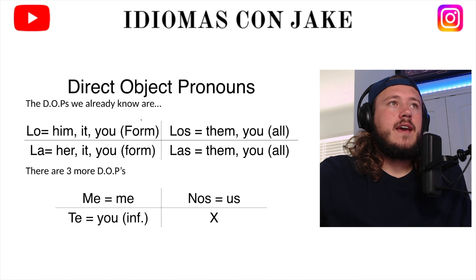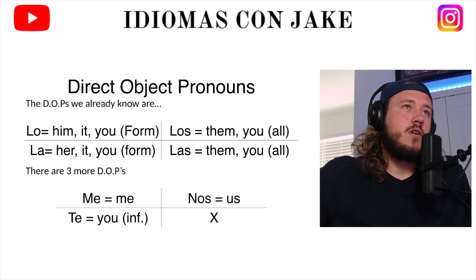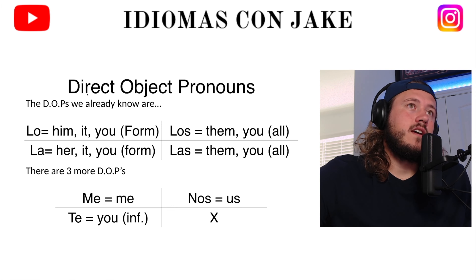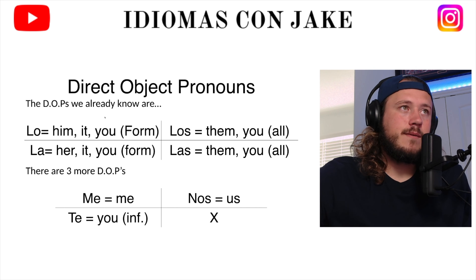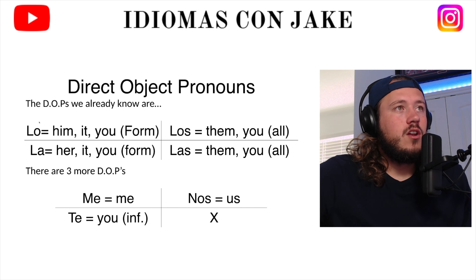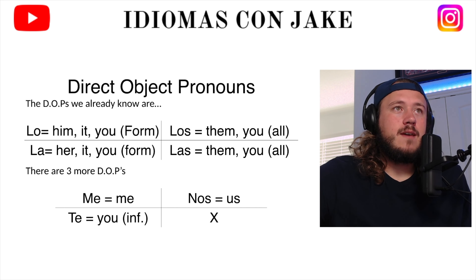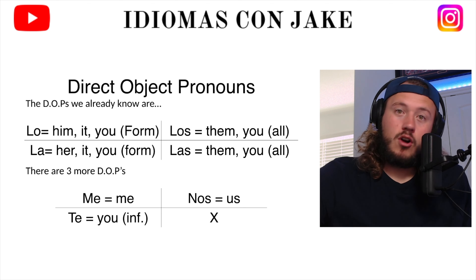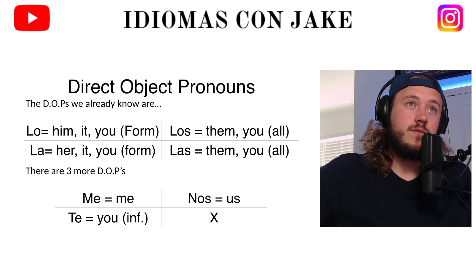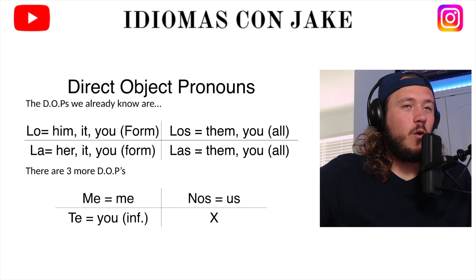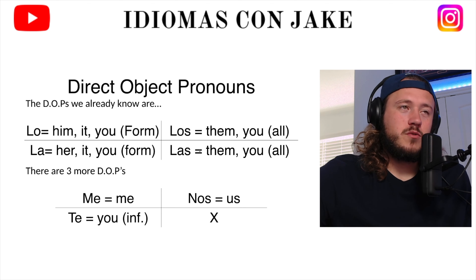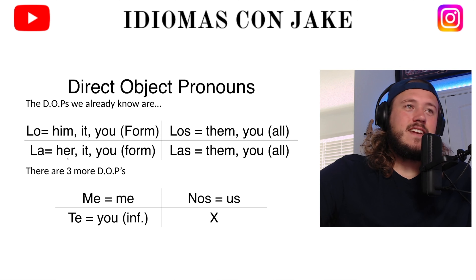Vamos a ver. Estos son los pronombres de objeto directo que ya sabemos — these are the ones we already know. Lo: him, it, or you. La: her, it, or you. Los or las: them, or you all, or you guys. Hay tres más — there are three more.